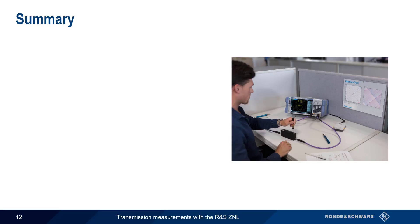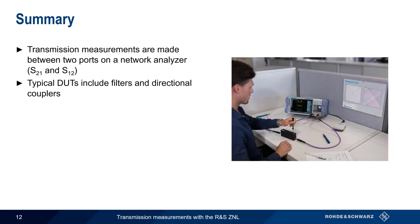Let's end with a brief summary. Transmission measurements are measurements made between two ports on a network analyzer, that is S21 or S12 measurements. Filters and couplers are examples of common passive devices that can be measured or characterized using transmission measurements.